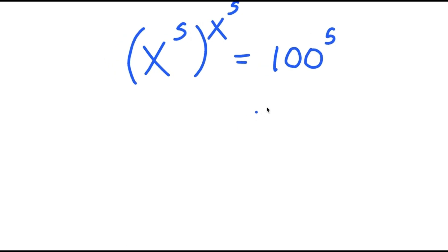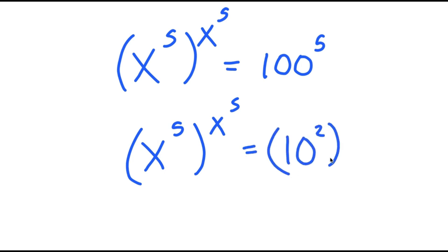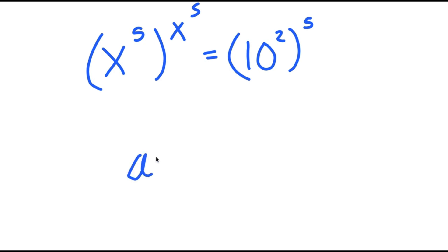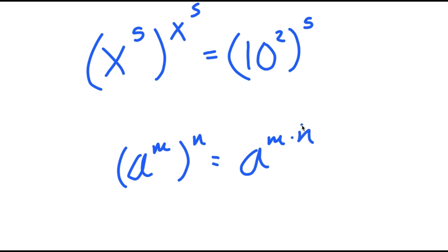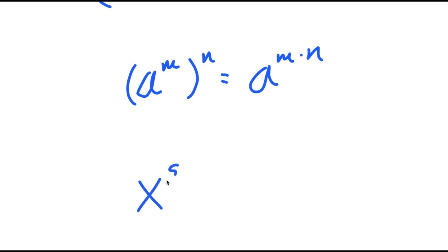From here, I can rewrite 100 as 10 squared, to the power of 5. And if I have something in the form a to the power of m to the power of n, this is equal to a to the power of m times n. So 10 to the power of 2 to the power of 5 turns into 10 to the power of 10.